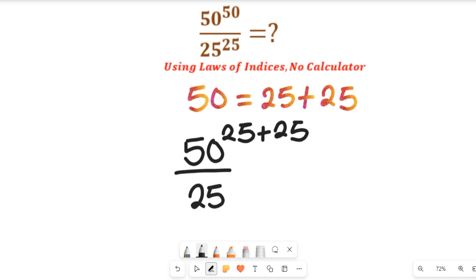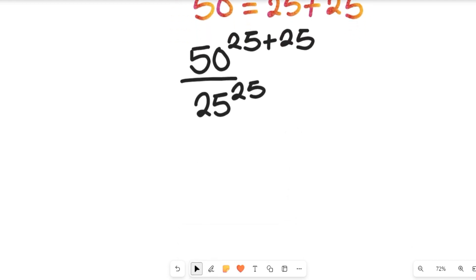So this will become 50 to the power of 25 plus 25 divided by 25 to the power of 25. Now recall one law of indices. According to that law of indices, if you have A to the power of X plus Y, this can be equal to A to the power of X multiplied by A to the power of Y.